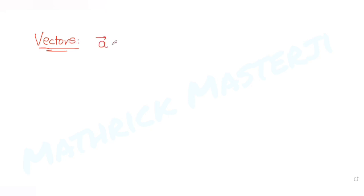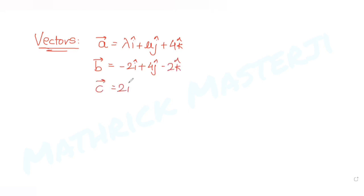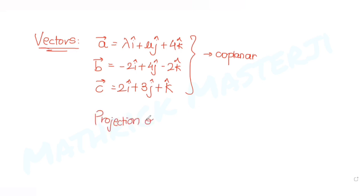The question tells us: if the vectors a is given as λi + μj + 4k, vector b is given as −2i + 4j − 2k, and vector c is given as 2i + 3j + k. We have been given these three vectors and they are coplanar. Also, the projection of vector a on vector b is equal to √54 units.